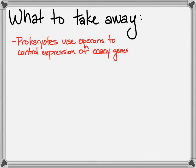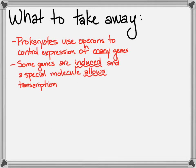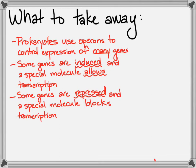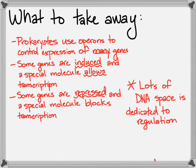What I want you to take away is that this is in prokaryotes, and they're using many genes at one time. All the genes of a related need or purpose are grouped together under one operon's control. You can induce these operons — meaning you allow transcription — or you can repress them and block transcription.